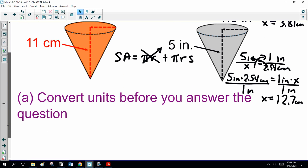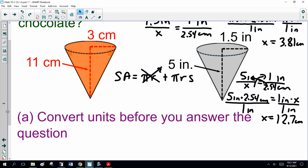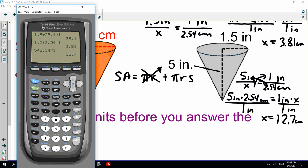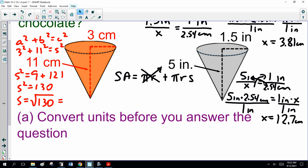So, convert units before you answer the question. Now, we still have to calculate the slant height. a² + b² = c². 3² + 11² = s². 9 + 121 = 130. s² = 130. I think it's 130. I don't expect you to be doing this, copying this out as we go along. I expect you to be paying attention. You can go back and figure it out later. Okay, so my slant height is 11.4.